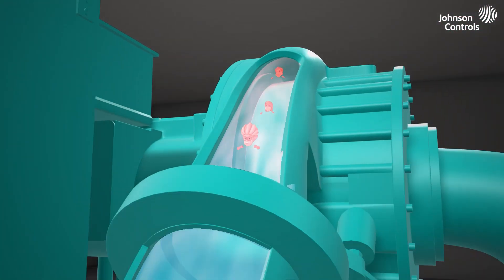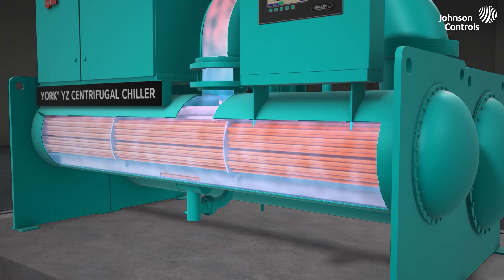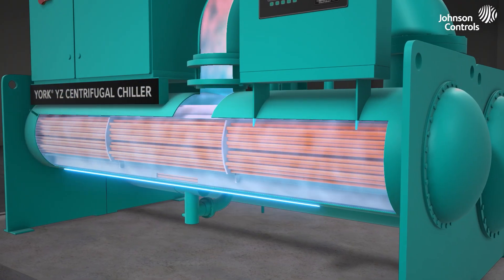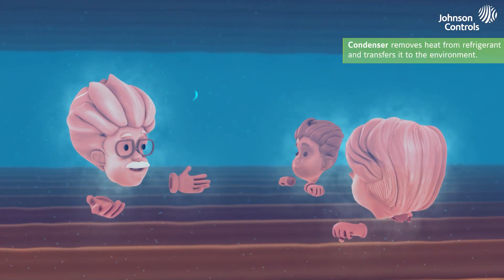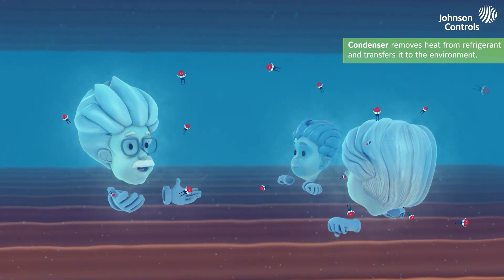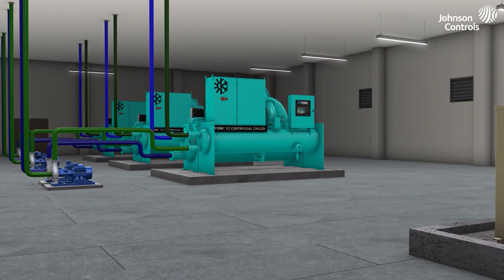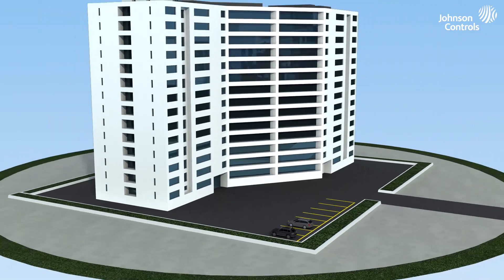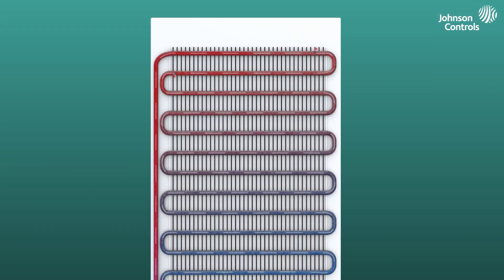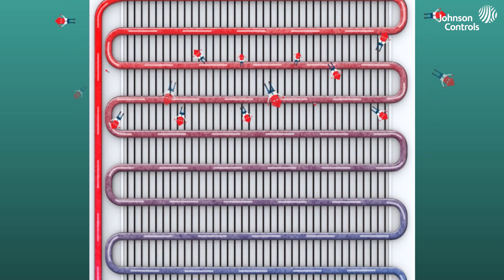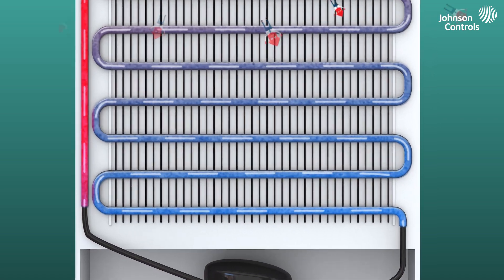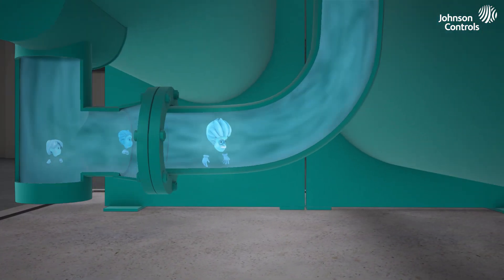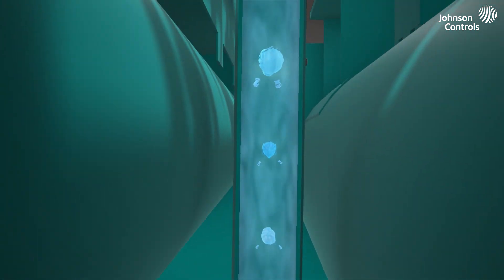The condenser looks a lot like the evaporator, and it performs a similar function, except this time the goal is to remove the heat instead of to absorb it. The condenser is usually located in the place where we want the excess heat to go, whether this is outside of a building or on the outside of a refrigerator. As we move through the coil, the environment will absorb the heat back from us because it's cooler than we are. We're liquid again, but we can't go back to the evaporator until we're low-pressure.